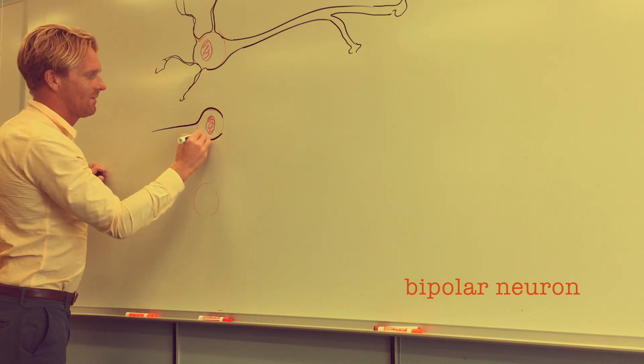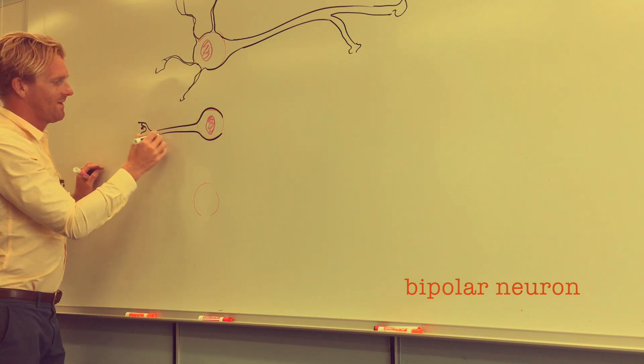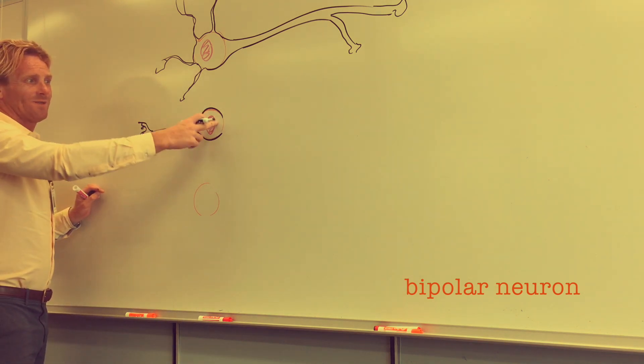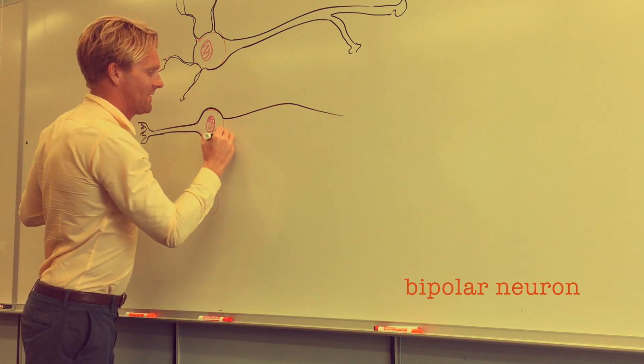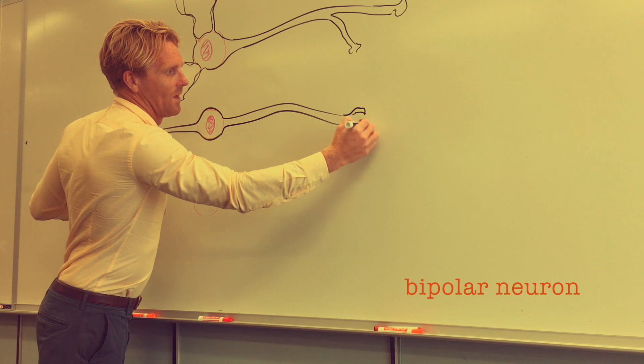So you'll have a single dendron in the middle. This will receive information from cells. It'll have a single dendrite on one side, the cell body in the middle, and then a single axon that transmits information away.